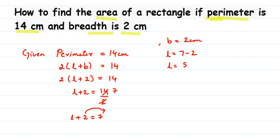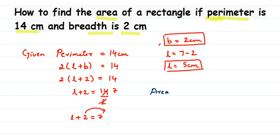So L is equal to 5 centimeters. We know from the question that breadth is 2 centimeters. Using these, we can find the area. Area of a rectangle is length into breadth. Length is 5 centimeters multiplied by breadth which is 2 centimeters. 5 into 2 is 10, and centimeter multiplied by centimeter gives centimeter square. So the area is 10 centimeter square.